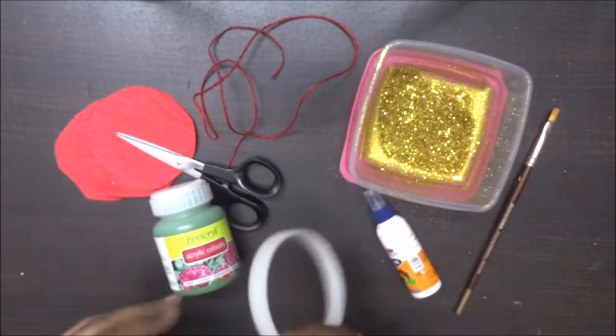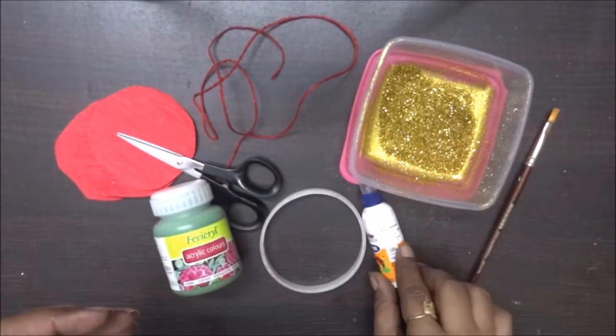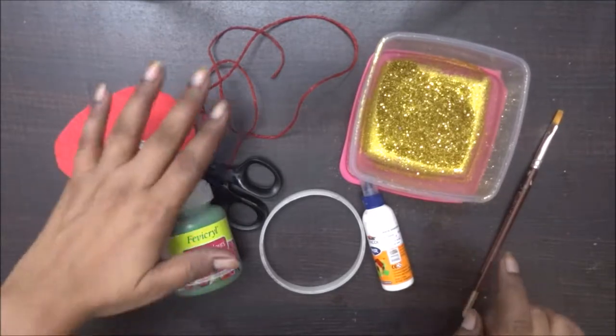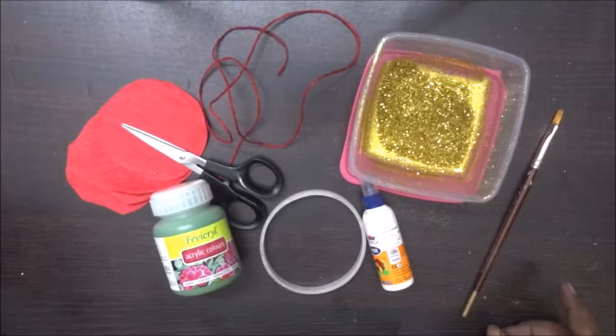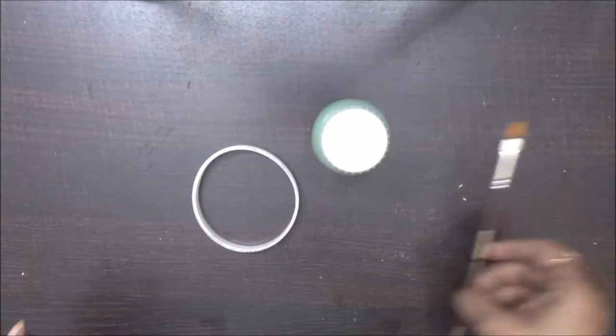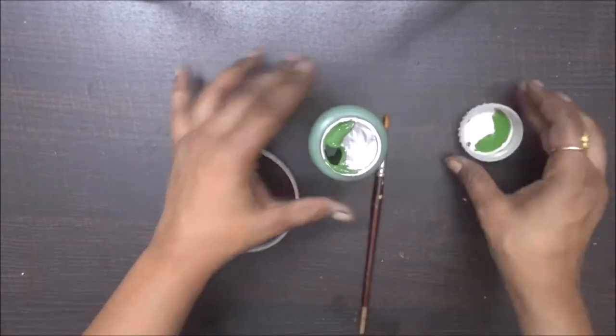Hello everyone, we'll be making a cute little wall hanging from these simple supplies. So let's get started. First I have taken a plastic ring. We are going to paint it with green acrylic color.